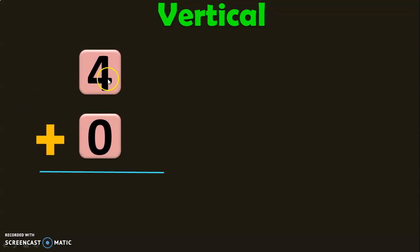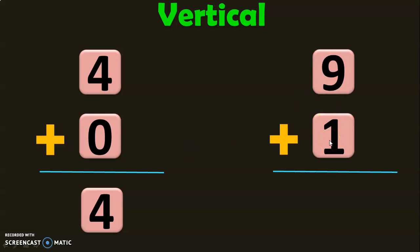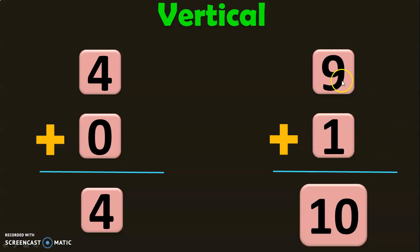Let us do another example: 4 plus 0. Again, based on the property of addition, when 0 is added to any number, the answer will be the same number. So 4 plus 0 is equal to 4. In horizontal or vertical addition, when 0 is added to any number, the answer will always be the same number. Next, 9 plus 1. From the properties of addition, when 1 is added to any number, the answer is the next number. So 9 plus 1 gives you the answer 10, which is the next number of 9.